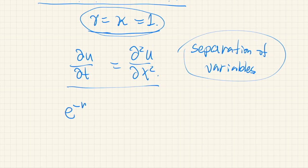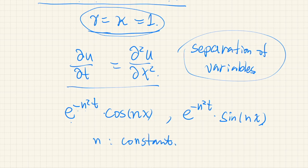So by using the method of separation of variables, we can find that solutions of these partial differential equations are given by this: e to the negative n squared times t times cosine nx, or exponential of negative n squared times t times sine nx, where n is any constant.